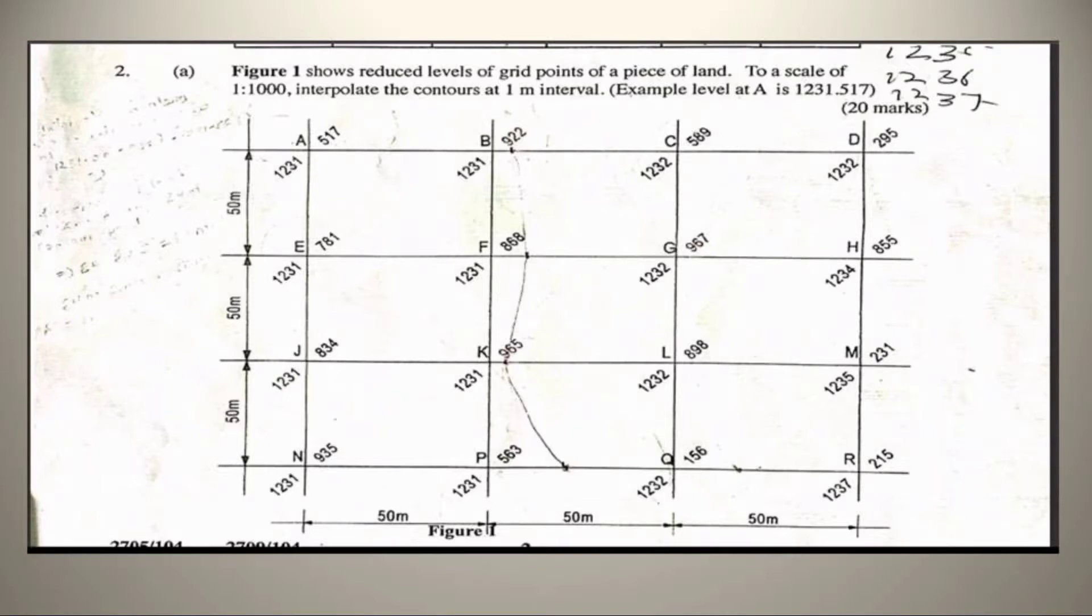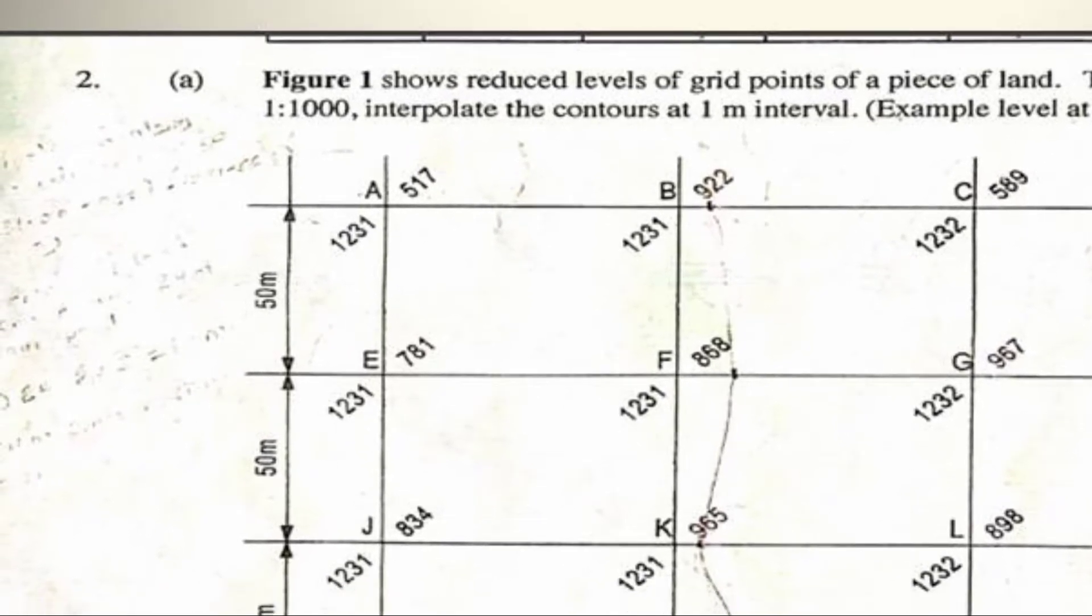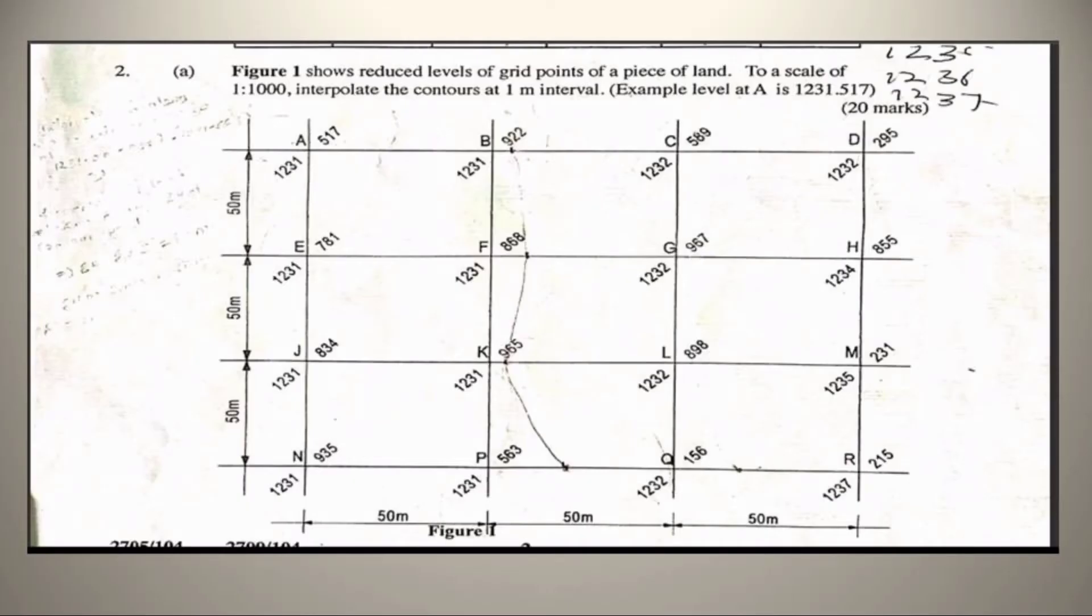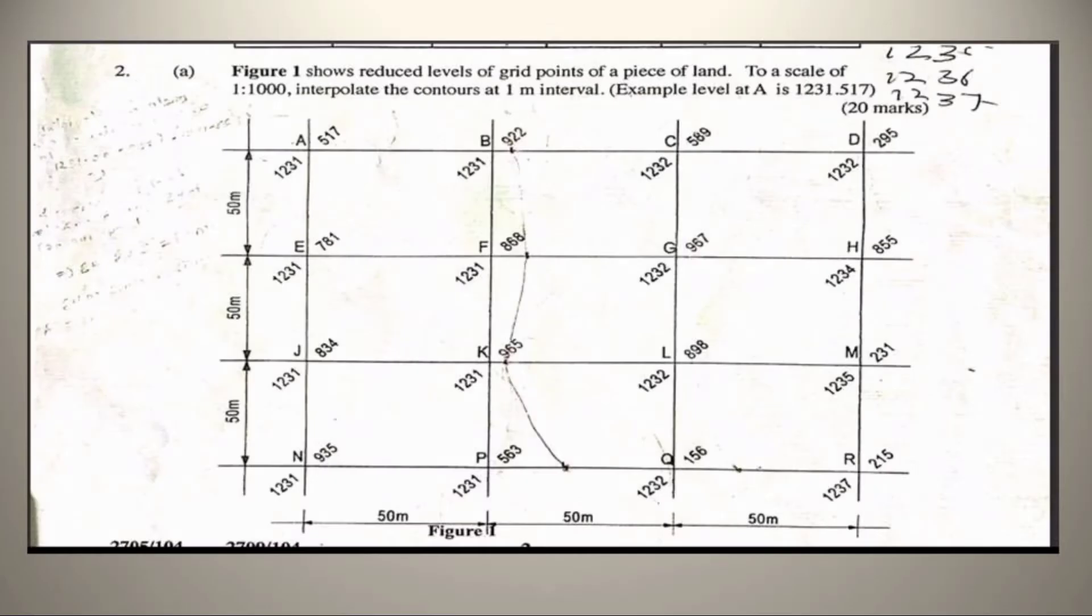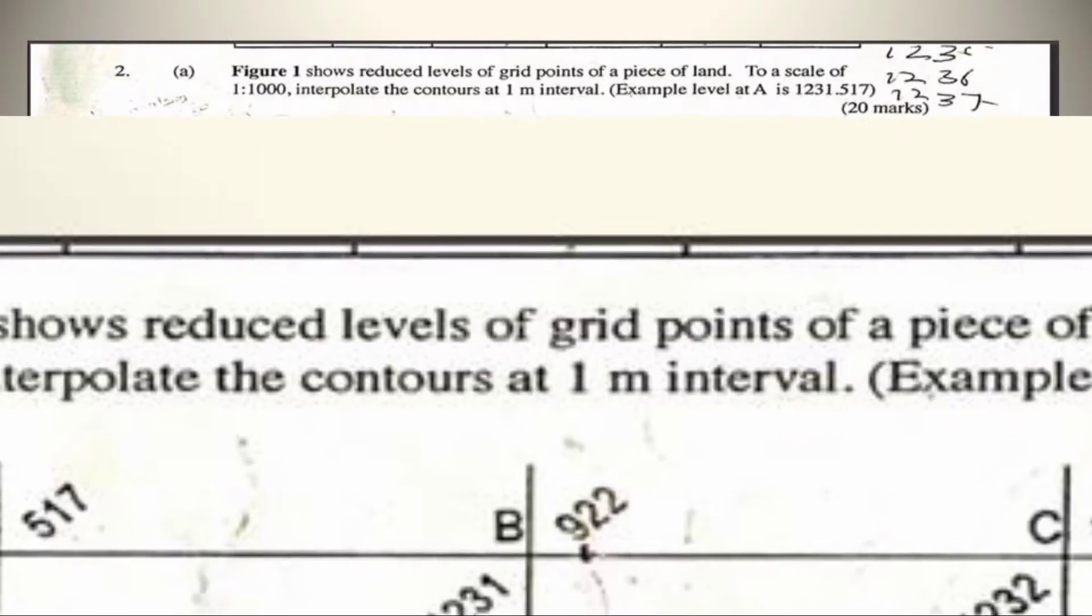After we have done, we will create our own contour intervals which are suitable for working while designing on site. To do so, we first pick the lowest and the highest point on the site. Here in our diagram, we have the lowest reduced level as 1231.517 and the highest reduced level on the diagram found at R will be 1237.21 meters. Now I am taking the contour interval of 1 meter as per the question.